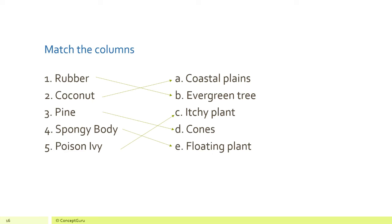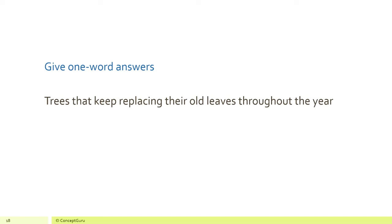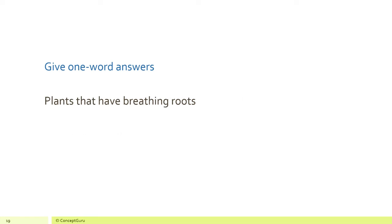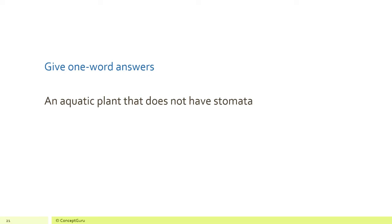Now give one-word answers. Plants that grow on land are called terrestrial plants. Trees that keep replacing their old leaves throughout the year are called evergreen trees. Plants that have breathing roots are mangroves. Trees that grow in the hills have cones instead of flowers. An aquatic plant that does not have stomata — the answer is hydrilla, or any underwater aquatic plant, because underwater aquatic plants do not have stomata.